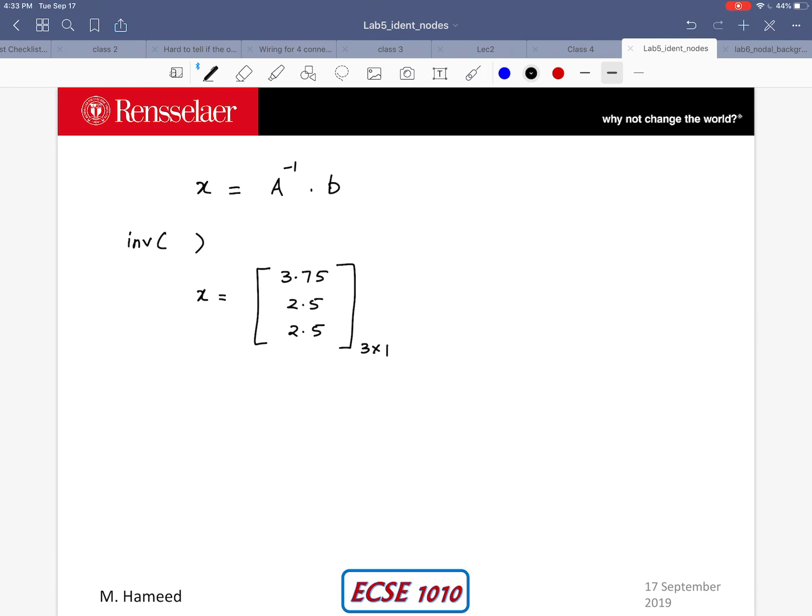Of course it is 3 by 1. So that means I've got VA as 3.75 volts. And this is my second unknown, VB, as 2.5 volts. And this is my third unknown, VC, as 2.5 volts. So one thing you can note here is VB is the same as VC, which means that if there was a resistor between nodes B and C, because they have the same potential, no current is going to flow through that particular resistor.